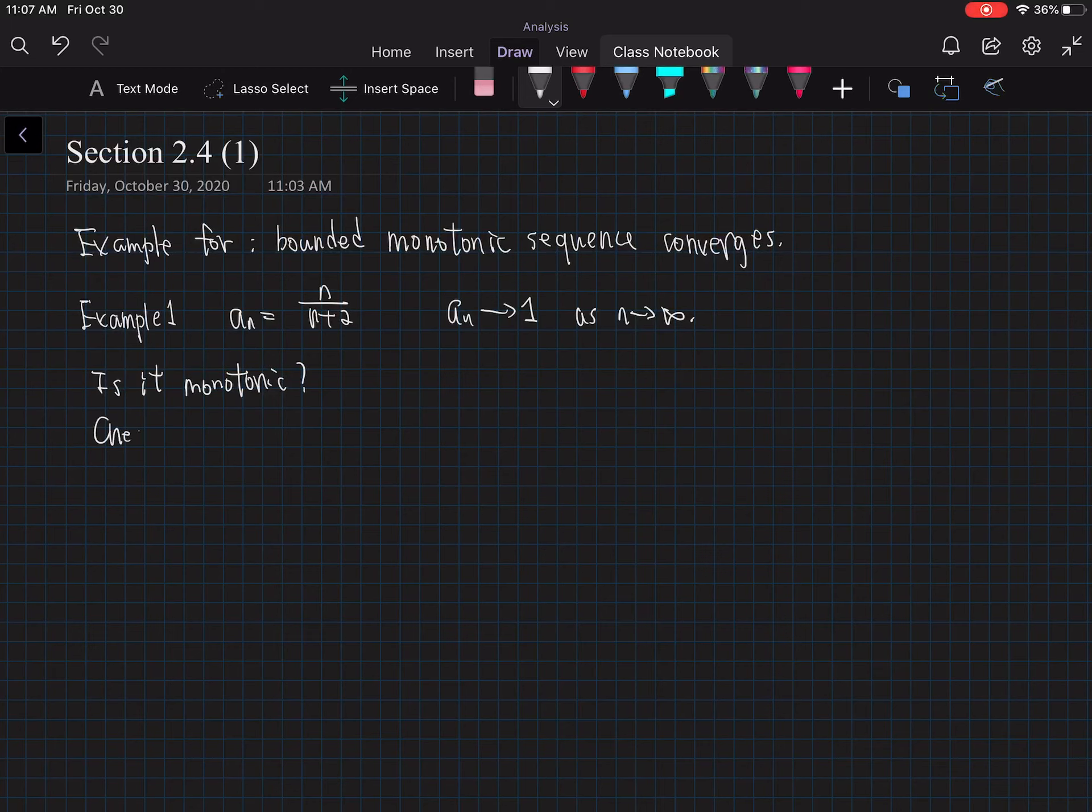How do we know? Check the derivative. We can check the derivative. So let f(x) equal x over x plus 2. Remember we're talking about sequences, we're only interested when x is greater than 1.